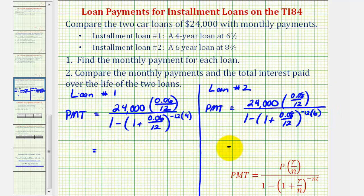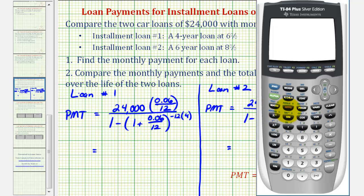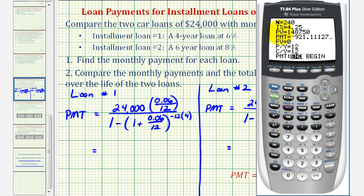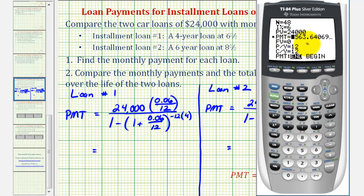Since we've already done several of these by hand, we're going to use the finance menu of the graphing calculator to determine these monthly payments. We'll press Apps, Enter for the finance menu, and Enter for TVM Solver. Capital N is the total number of payments. Loan one is a four-year loan paid monthly, so N is four times 12, or 48. The interest rate I is six percent. The present value of the loan is $24,000. The future value will be zero when the loan is paid off. Payments per year are 12, compounds per year is also 12, and the payments are at the end of the month. We'll go back up to PMT, clear it, and press Alpha Enter to solve. The monthly payment will be $563.64.